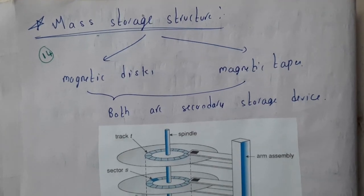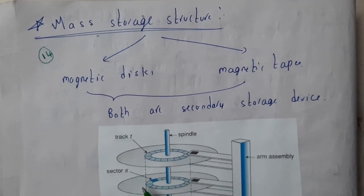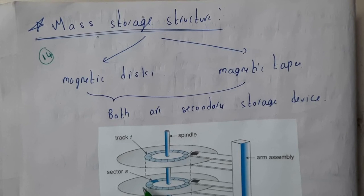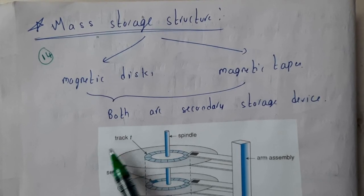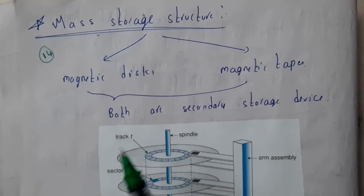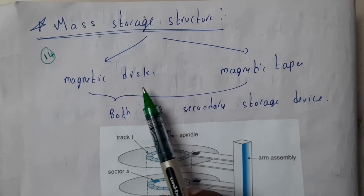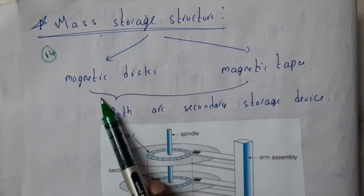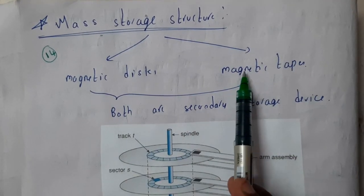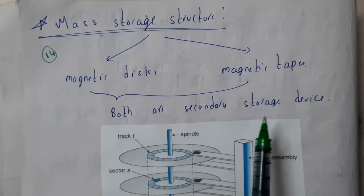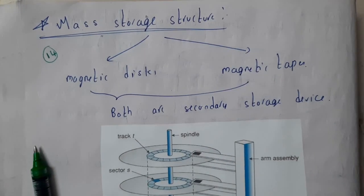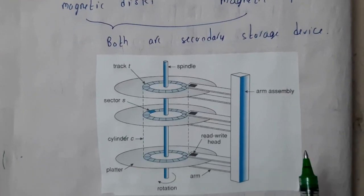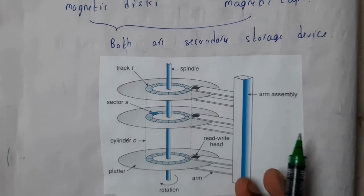Hello guys, we are back with our next tutorial. In this tutorial, let us go through mass storage structures. Mass storage structures are where you can store large amounts of data. The best examples are magnetic disks and magnetic tapes — both are secondary storage devices, not the primary or main memory storage.